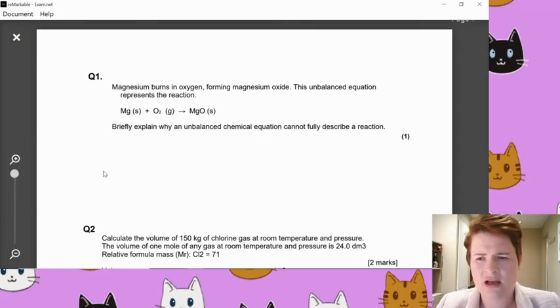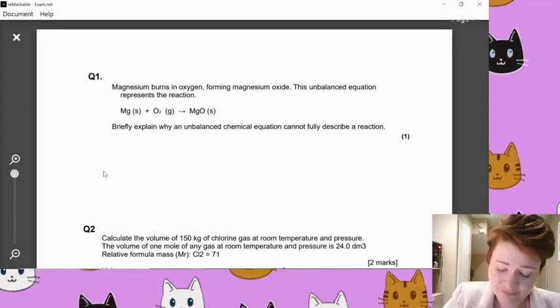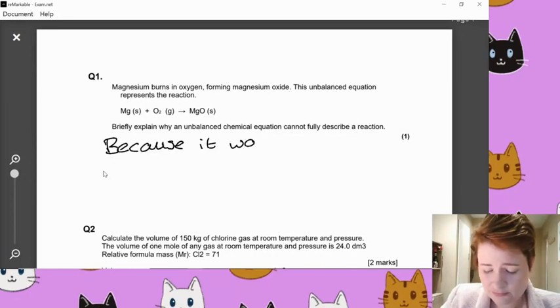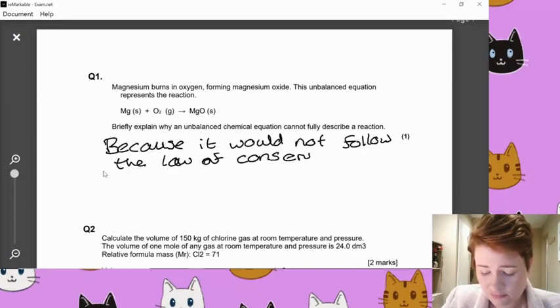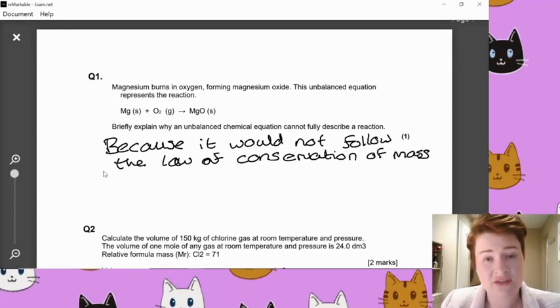Now, in exam net, for some strange reason, it did revert to an older version of the paper that I'd written. So this was only worth one mark, but your question paper might have said that it's worth two marks. Sorry about that. I'm not entirely sure what happened there. We're still getting used to this technology. So my bad. Anyway, briefly explain why an unbalanced chemical reaction cannot fully describe a reaction.